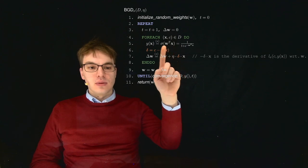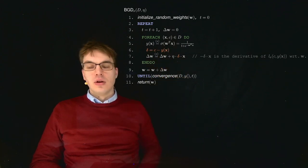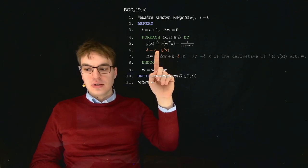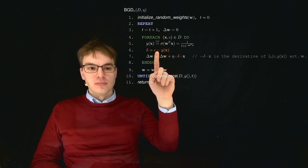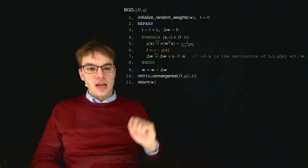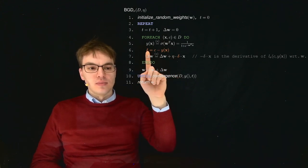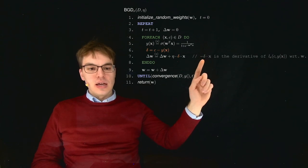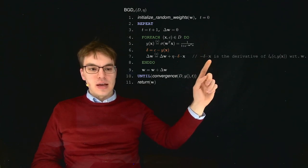We already computed our y of x and what remains is just to take our ground truth class, which is one or zero. In our first example it's one. Subtract this, subtract this y, and then we get our Delta. We will later see that this minus Delta times X is actually the derivative of our loss function.